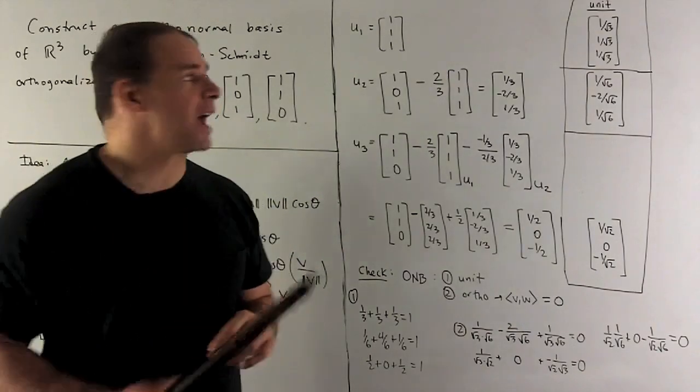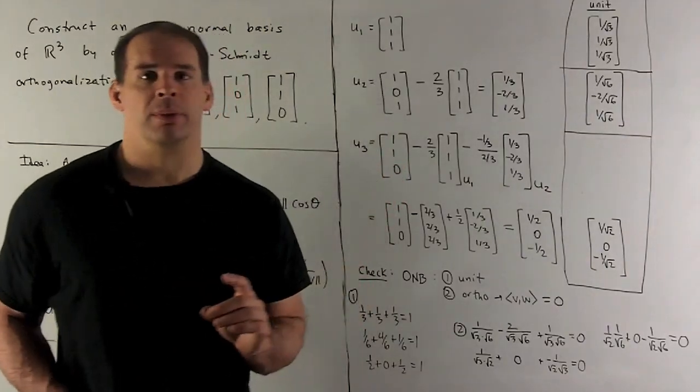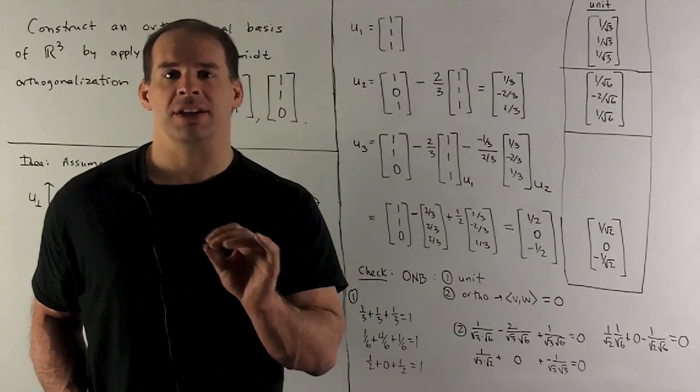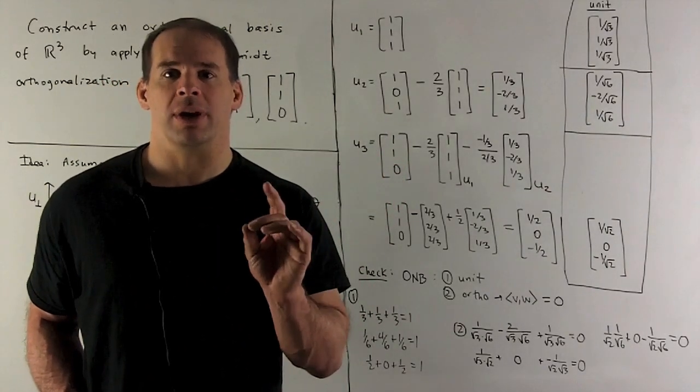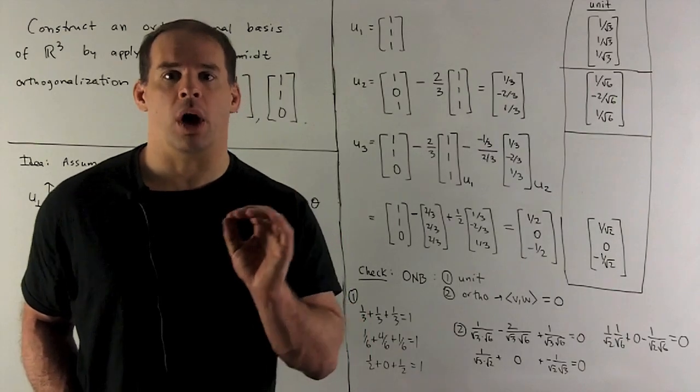Now, to begin, we just pick our first vector, leave it as is. I'm not going to do unit vectors until the end of the process. So in this case, pick your first vector. That's my u1.